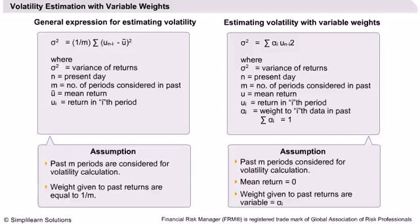Now consider volatility as a disturbance. If the disturbance is very high today, it is most likely to be high tomorrow also. For example, when there was an attack on the World Trade Center, the markets became very volatile, and it continued for a few days. Hence, in estimating volatility, we need to give a higher weight to the most recent data — that is, we cannot weigh all past data equally.